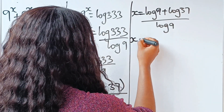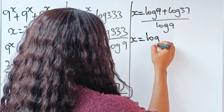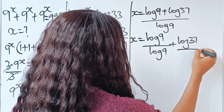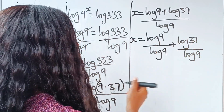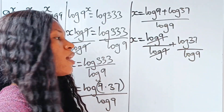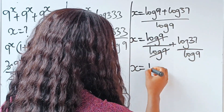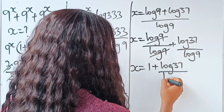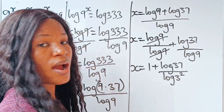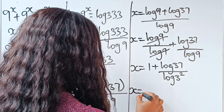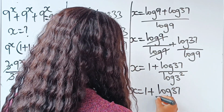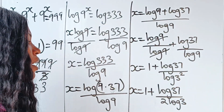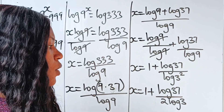Now we have x = log 9 / log 9 + log 37 / log 9. Since log 9 / log 9 = 1, we get x = 1 + log 37 / log 9. And log 9 can be written as log(3²), which equals 2 log 3. So x = 1 + log 37 / (2 log 3).